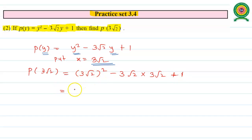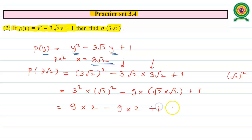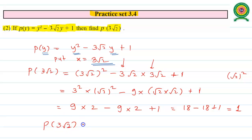Simplifying: separate the square to get 3² times (√2)², then minus 3 times 3 equals 9 times √2·√2, plus 1. So 9 times 2 gives 18, minus 9 times 2 gives 18, plus 1. So 18 minus 18 equals 0, and 0 plus 1 equals 1. Therefore the value of P(3√2) equals 1.